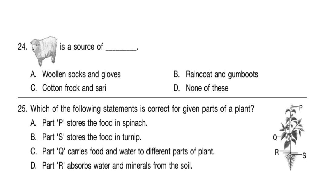Question 24. Sheep is a source of what? The correct answer is Option A: woolen socks and gloves.